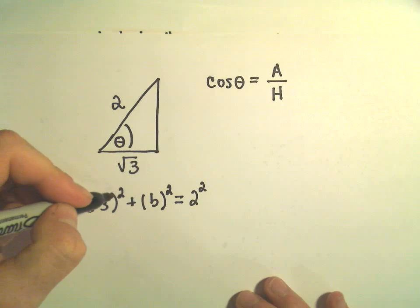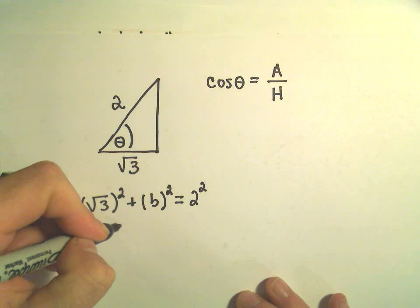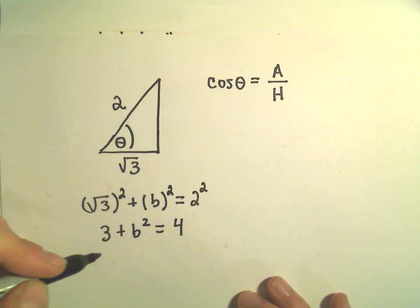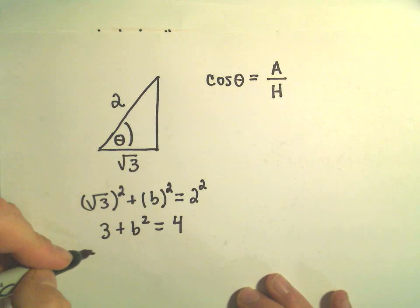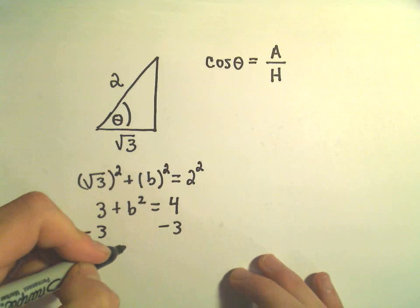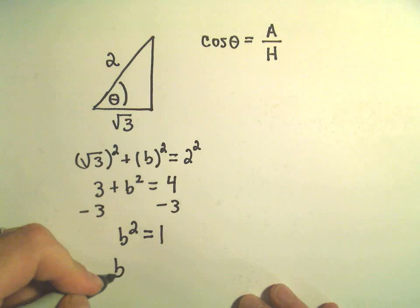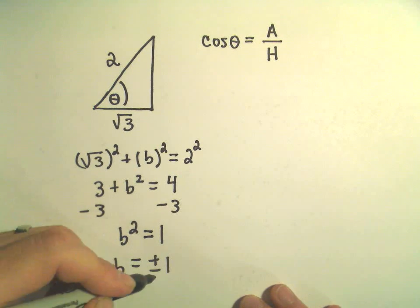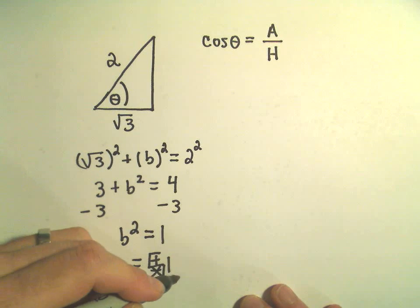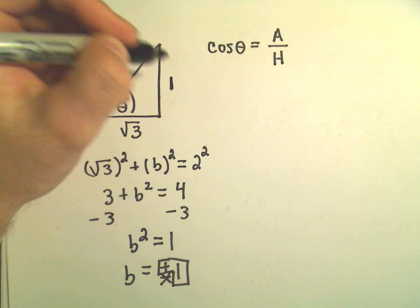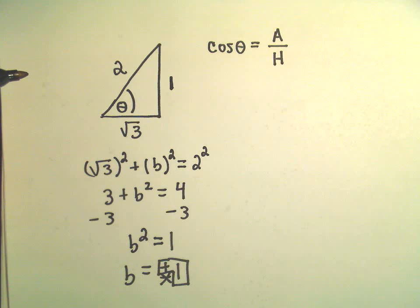Well, the square root of 3 squared is just going to be 3, plus b squared, 2 squared is going to give us 4, and now if we subtract 3 from both sides, we'll just get that b squared equals 1, and when we take the square root, we'll get positive negative 1, but it's got to be the positive 1 because we're talking about a length here. So this simply has a length of 1.